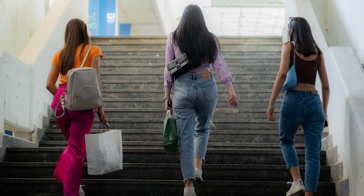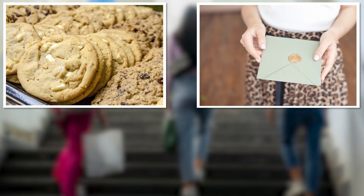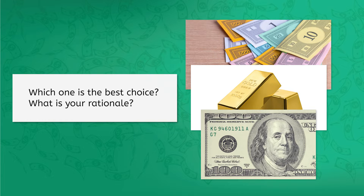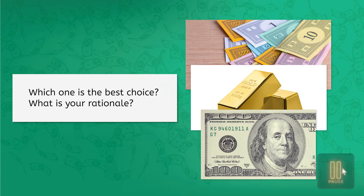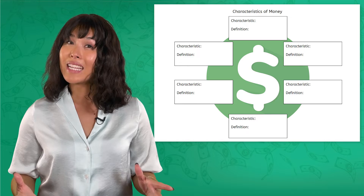Let's say you need to grab a few things from different stores — cookies for a potluck dinner, a birthday card for a friend, and part of your cell phone bill. You can use one of three things to pay: a $500 bill from a board game, a gold bar, or a $100 bill. Which one is the best choice, and what's your rationale? There are six characteristics of money that make it effective for trade, and we've included a graphic organizer in the PDF to help you take notes.